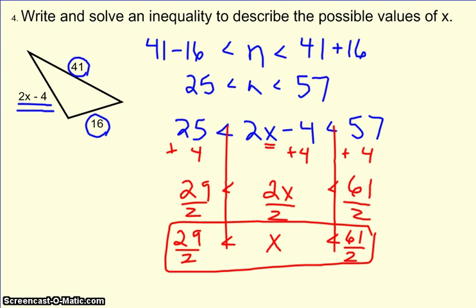If the fractions don't mean much to you, just remember, 29 over 2 is the same thing as 14 and a half. And 61 over 2 is the same thing as 30 and a half.